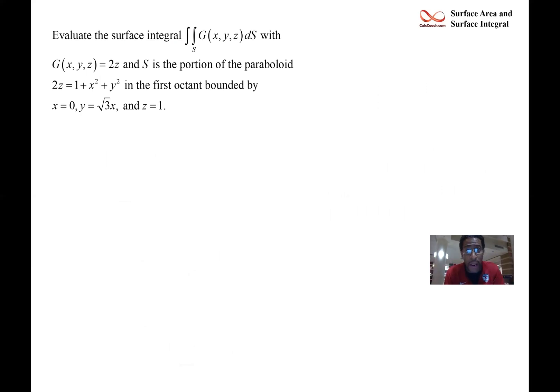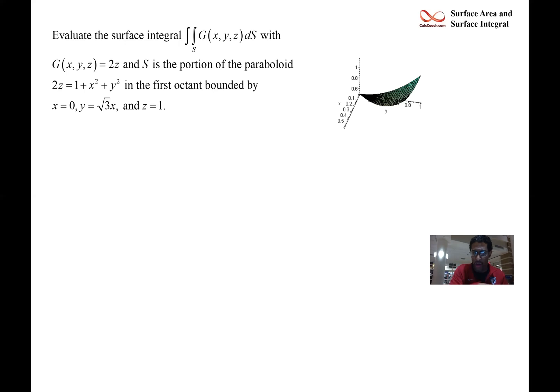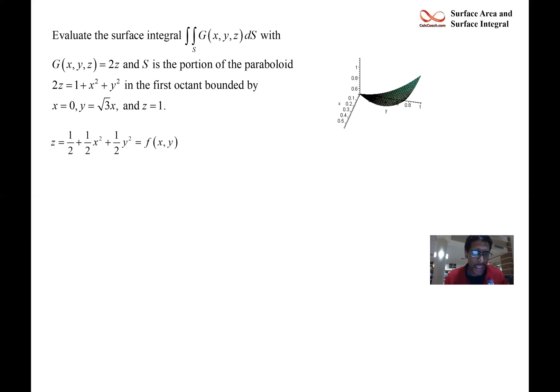For our first surface integral example, the multivariable function is 2z, and S is the portion of the paraboloid — a bowl — with equation 2z = 1 + x² + y², in the first octant, bounded by x = 0 (the y-axis), z = 1, and the line y = √3·x. So z = 1 is the vertical cutoff one unit off the xy-plane, and we have those two lines in the xy-plane. Solving for z explicitly, we divide everything by two: z = ½ + ½x² + ½y².